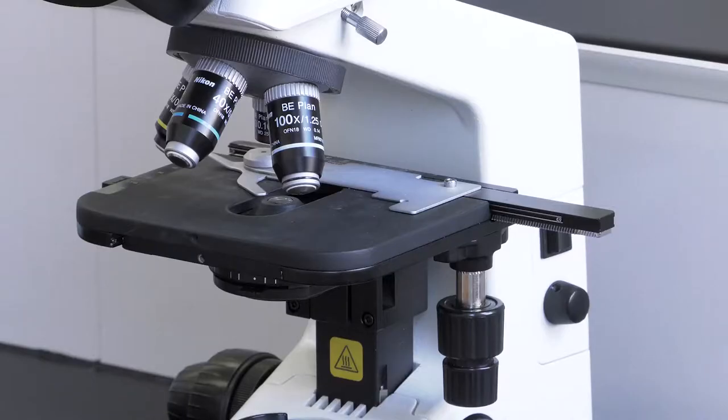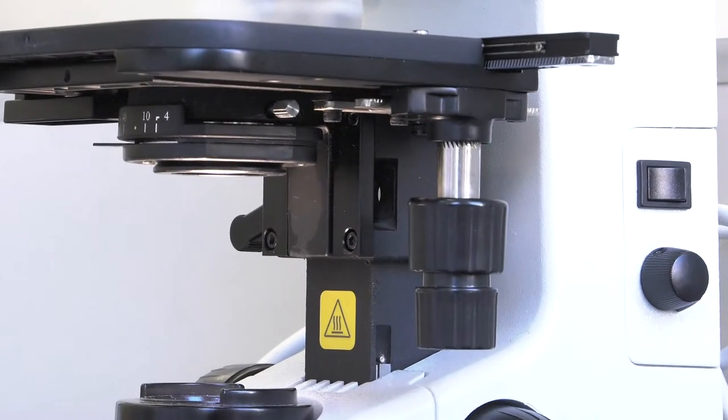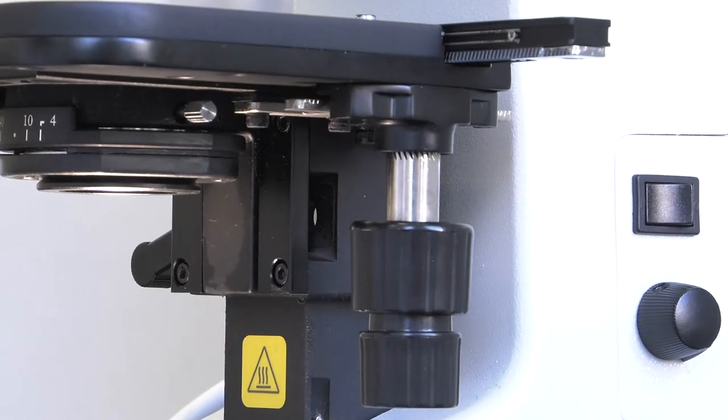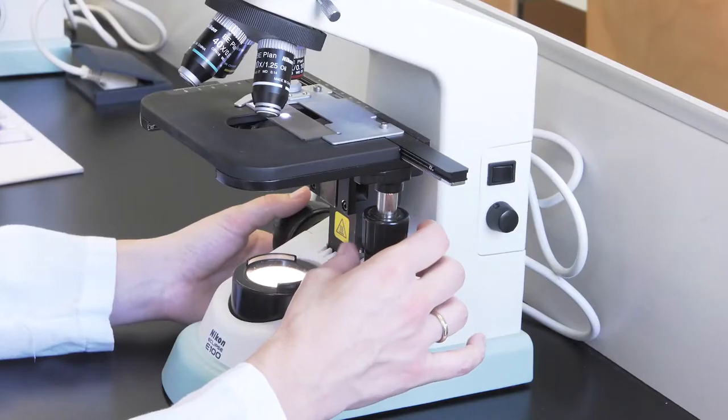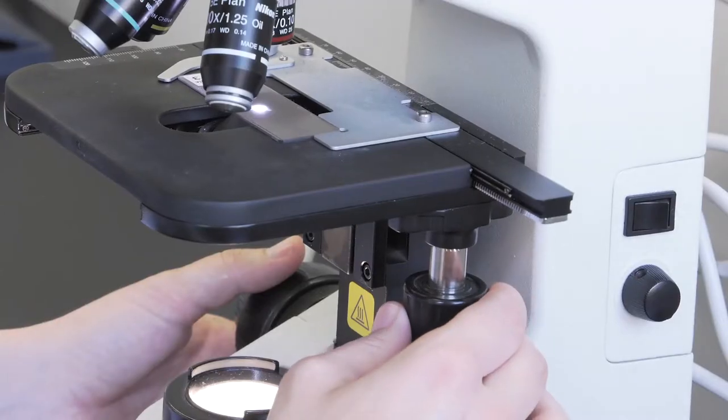The specimen holder is the metallic piece that holds the preparation and is also used to move it. On one side of the microscope, there are two knobs controlling X and Y movement of the mechanical stage. This allows us to place the preparation in the desired position.